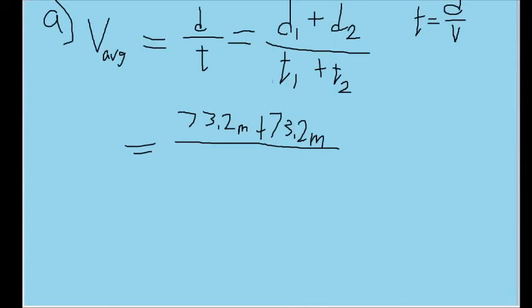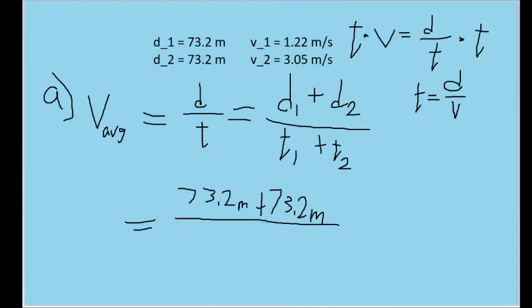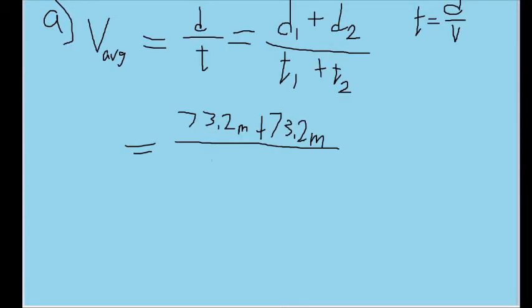And the time components will now be just this being divided by the speed for each segment of the runner's motion. So for T1, we would put essentially D1 divided by V1, so 73.2 meters divided by 1.22 meters per second.